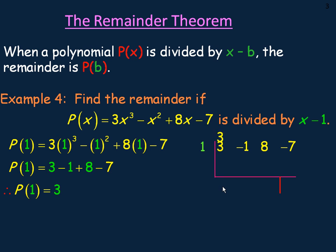Bring the 3 down. 3 times 1 is 3. Negative 1 and 3 add to 2. 2 times 1 is 2, 8 and 2 add to 10. 10 times 1 is 10. Negative 7 and 10 add to 3, so same remainder. So the remainder is 3.